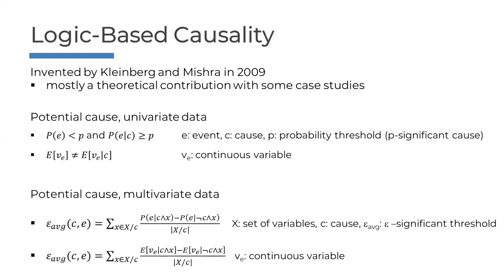For multivariate data, you extend this to multiple causes, multiple variables, and covariates. Essentially, you test the probability of the event when both the cause and covariate are present, minus the probability when the covariate is present but the cause is not. You do this for every covariate in the set except the cause itself, normalize it, and that gives you the epsilon average for cause and event. The same logic applies to the continuous case, giving you an epsilon measured under a particular time delay.